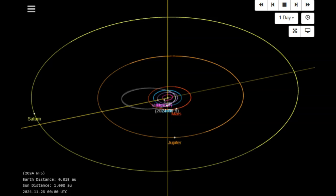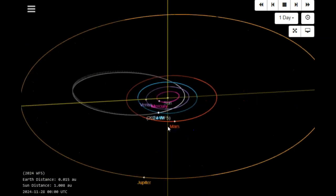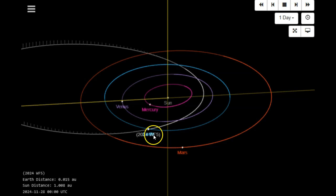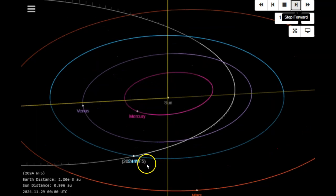This rock will pass between Earth and the Moon at some point tomorrow, and we'll look at those details. Zoom into the inner solar system and there we are right there, 2024 WF5. And we'll move ahead one day and there's our close approach as you can see right there. One looks like they're on top of the other.